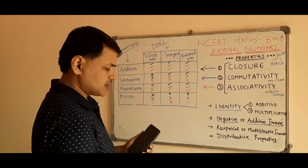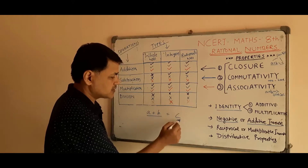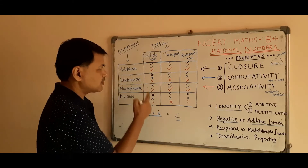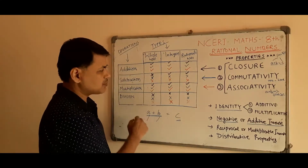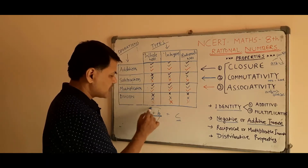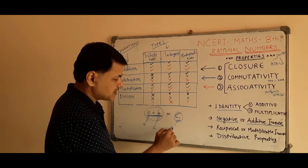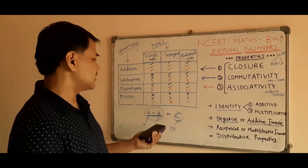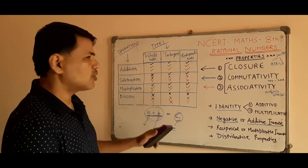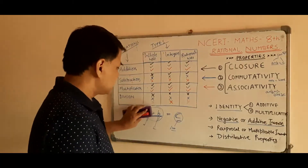Let's start with the first — closure property. What is closure property? Suppose we have two numbers and we are adding them. There will be some result. For all these properties, remember that we are taking same-type numbers. If we are talking about whole numbers, both are whole numbers; if integers, both are integers. For example, a plus b equals c — if a is an integer and b is an integer and after adding the result is also an integer, then we say this is closed. We can say integers are closed for addition, or that the closure property is true for addition in case of integers.